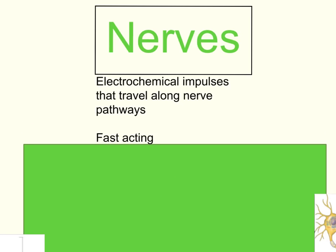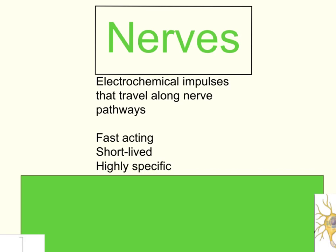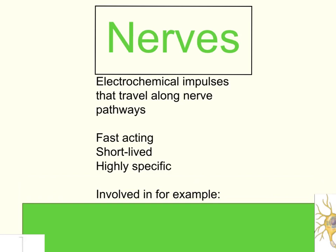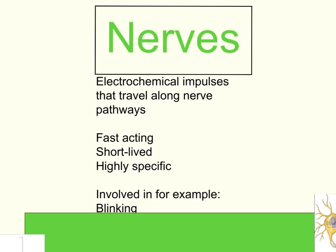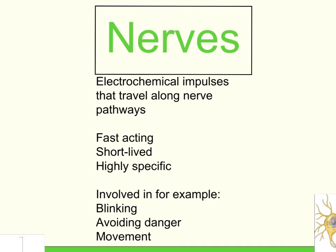Nerve messages are fast-acting because they are electrochemical. They're short-lived — a response to a nerve message doesn't last very long, unlike hormones which are long-lasting. Nerve messages are also highly specific. For example, talking is controlled by nerves, specifically targeting the mouth and vocal cords to make specific movements and produce specific sounds. Other examples controlled by nerve messages include blinking, avoiding danger, and movement.